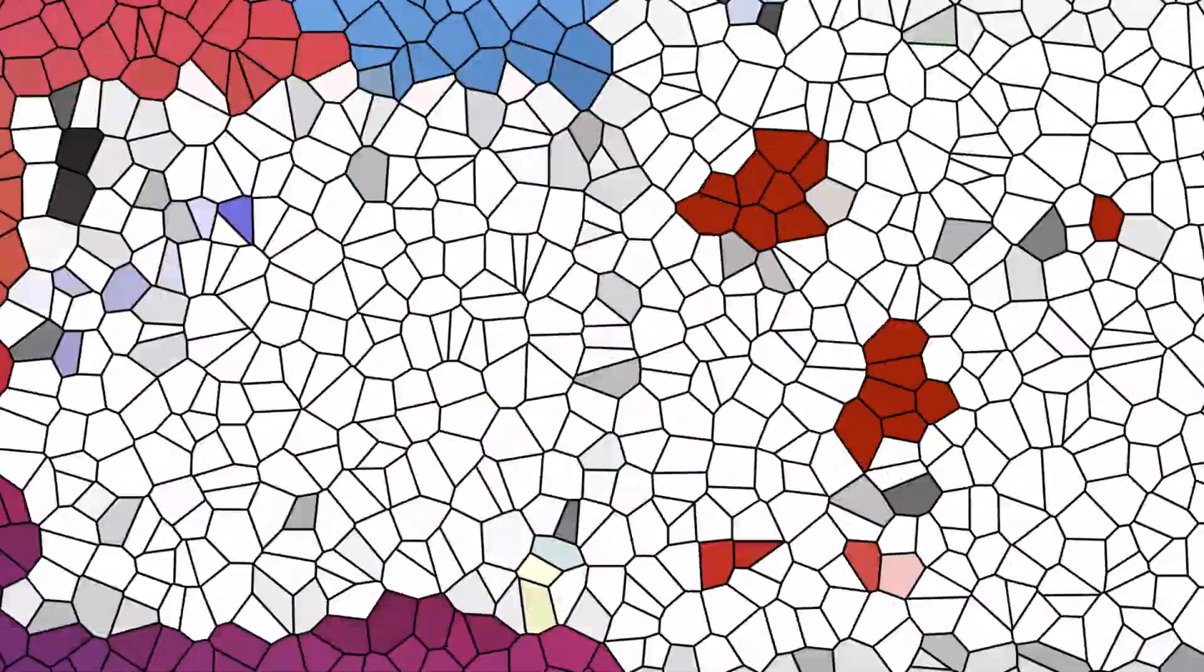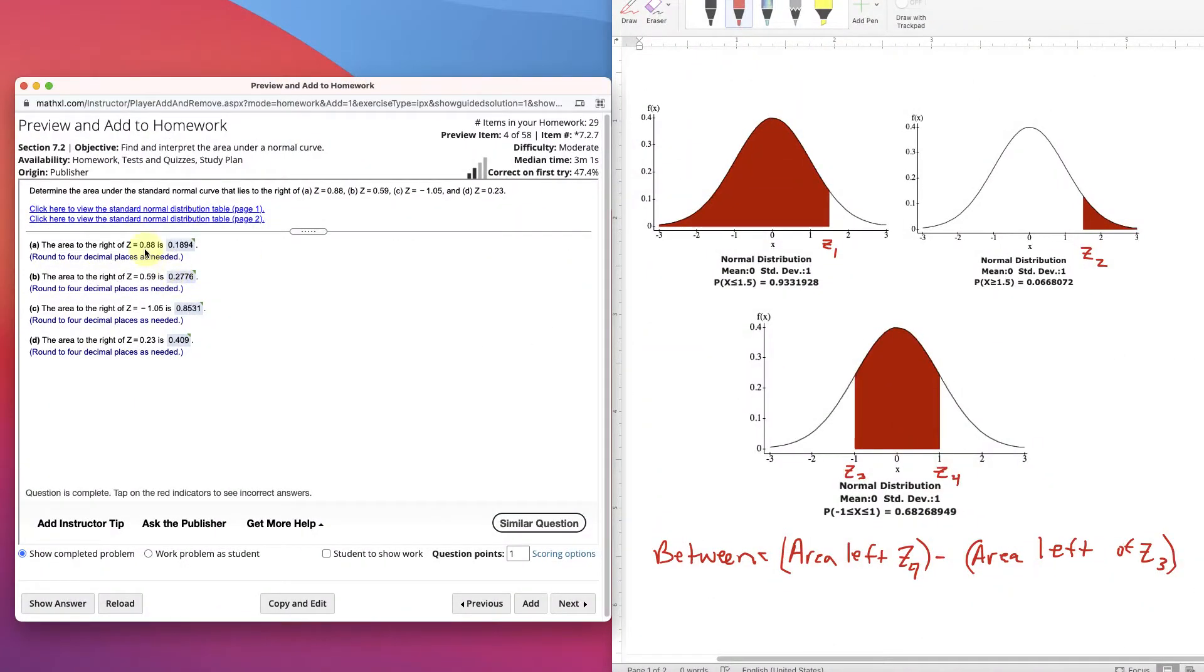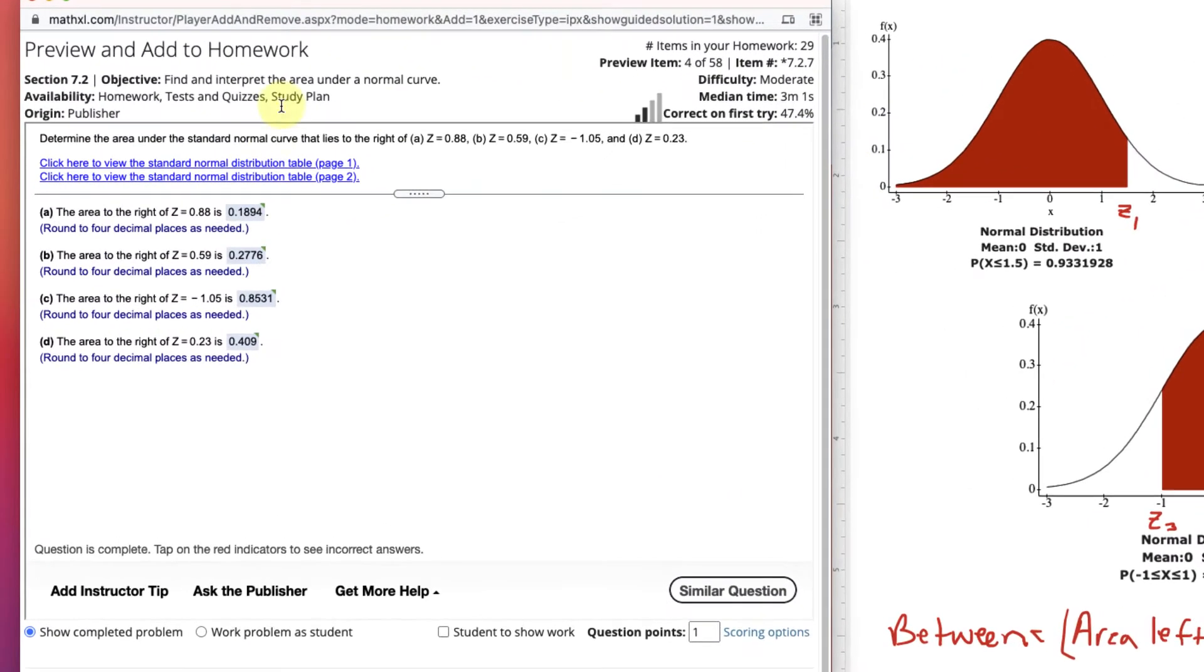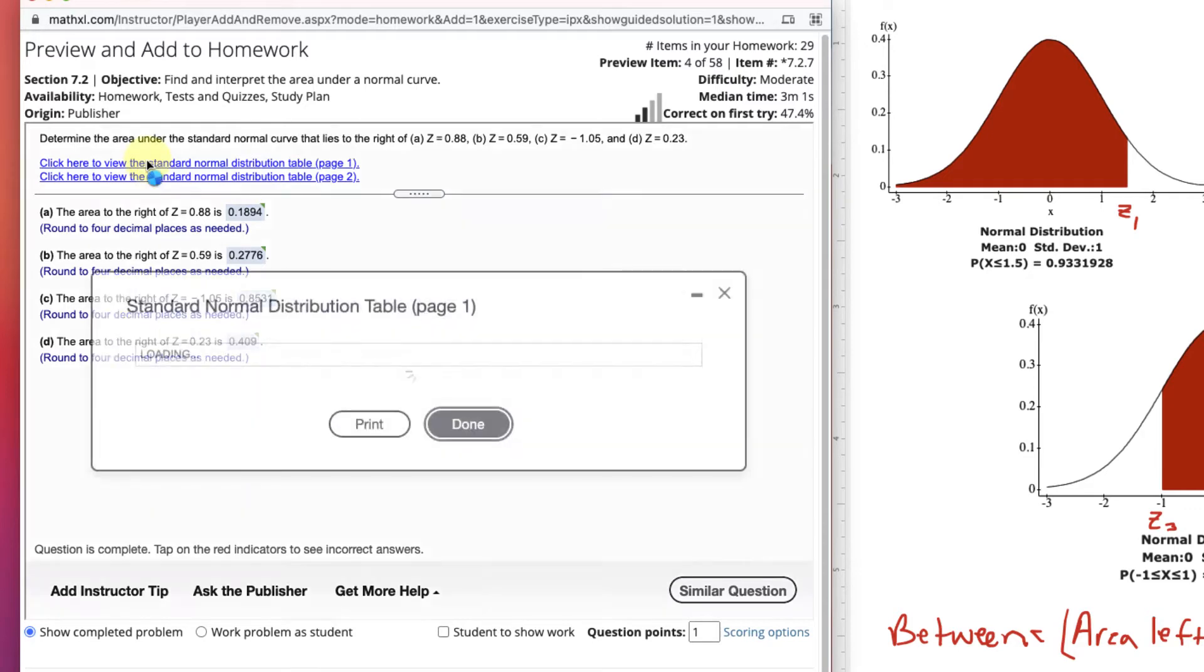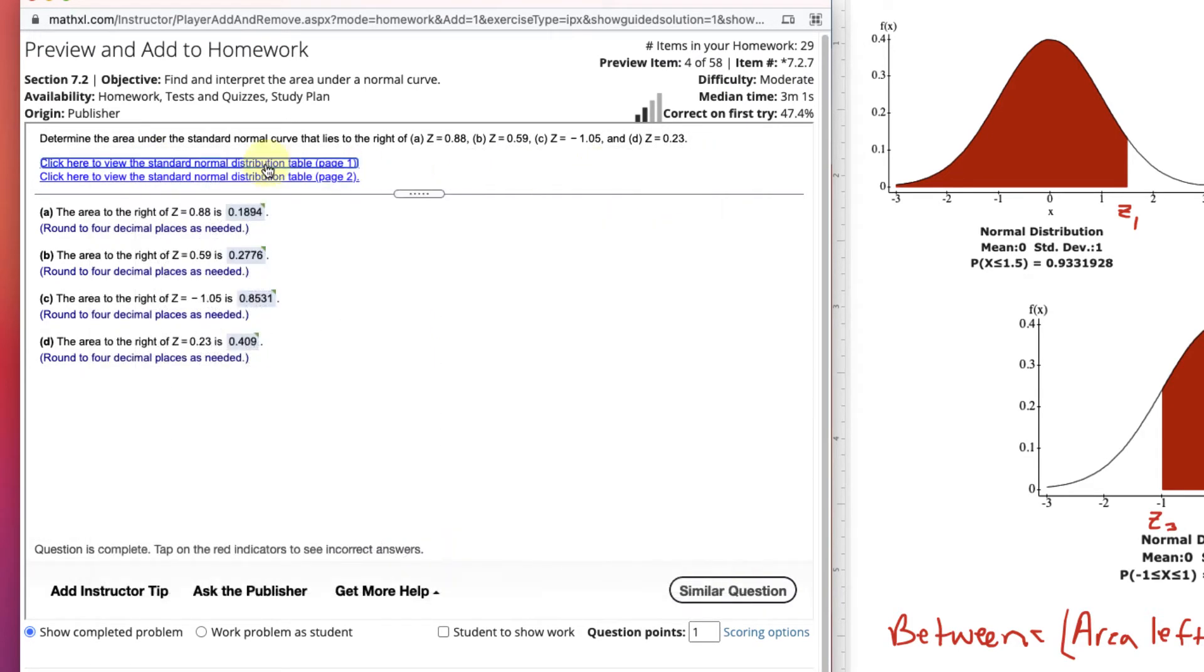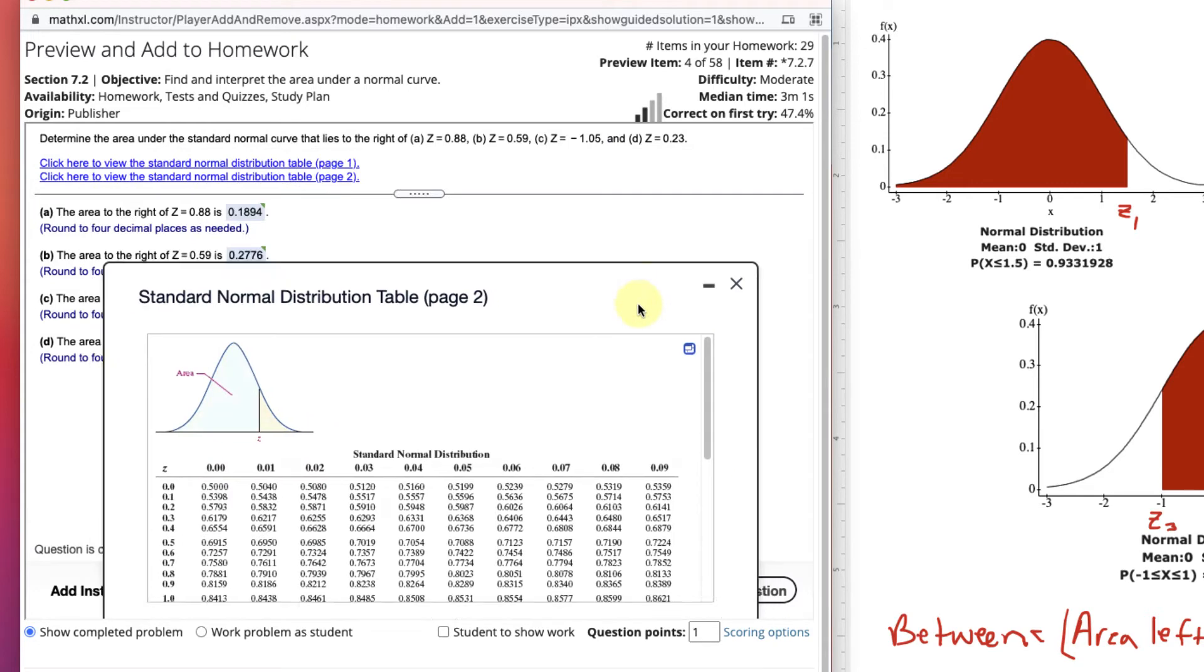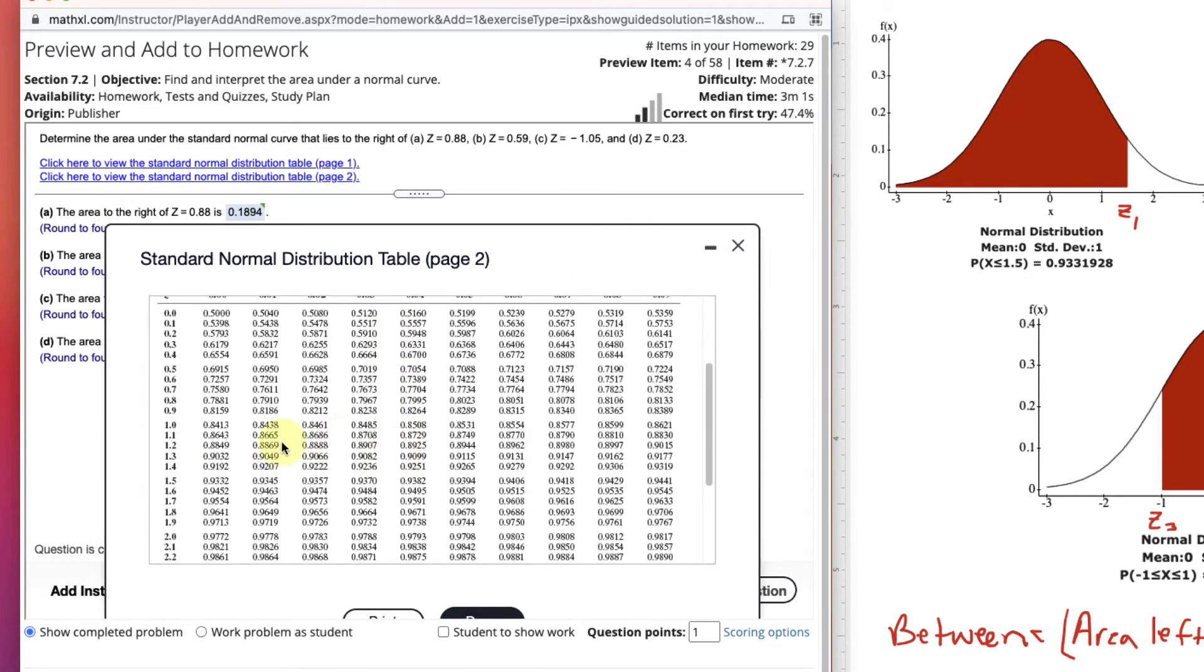Let's go to another example. This one is to the right of 0.88. We're going to be looking at something like this. Let's look at the chart here. Click the first one. It's 0.88 on it. Oh, those are the negative values. Go to the positive values, 0.88. Down to 0.8. 0, 1, 2, 3, 4, 5, 6, 7, 8. 0.81, 0.8106.